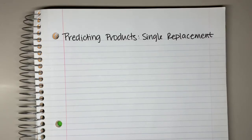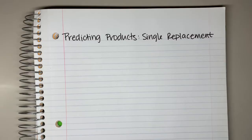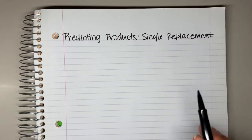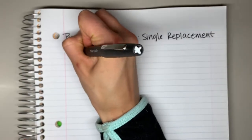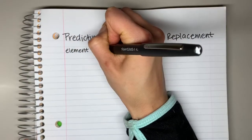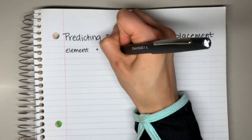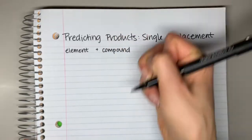In this video, we are going to talk about how to predict the products of a single replacement reaction. Before we get into actually predicting the products, we need to first talk about how to recognize a single replacement reaction from just the reactants and what to expect when predicting the products. For a single replacement reaction, you are going to see a common pattern of an element reacting with a compound.